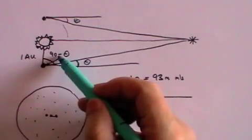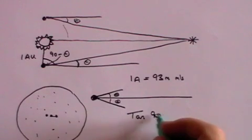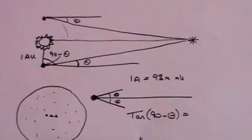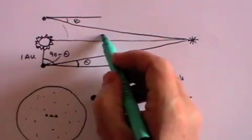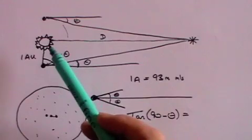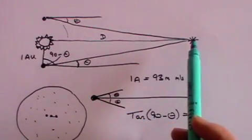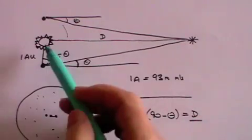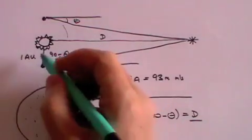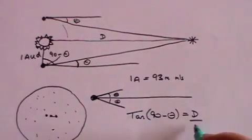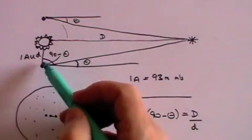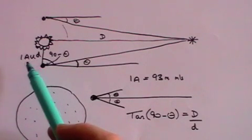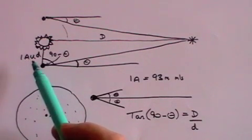...of this angle here which is 90 minus theta is equal to this distance here which we'll call capital D, that is the distance from our Sun to the nearest star, divided by that distance there which we'll call little d which is the distance from the Earth to the Sun which we know is one astronomical unit which is 93 million miles.